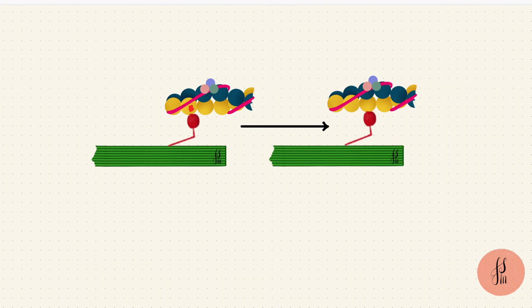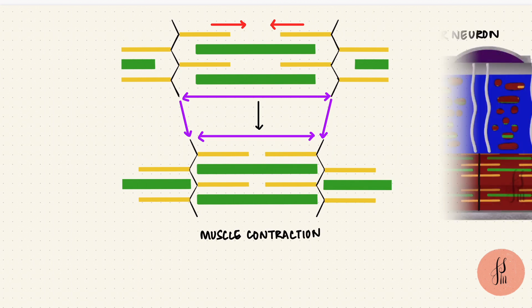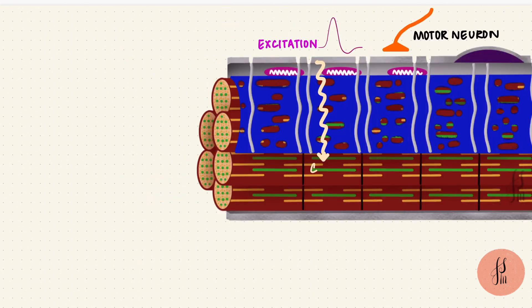Each time the cycle happens, myosin attaches to a new monomer on the actin filament. So it's like the myosin molecules are walking along the actin filament. This is the walk along theory. With the inward sliding of the thin filaments, the length of the sarcomere reduces and the muscle contracts. Excitation got coupled with contraction.